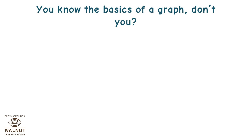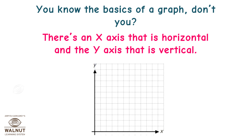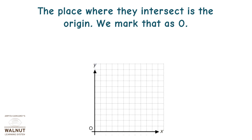You know the basics of a graph, don't you? There's an x-axis that is horizontal and the y-axis that is vertical. The place where they intersect is the origin. We mark that as zero.